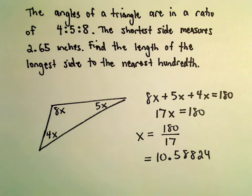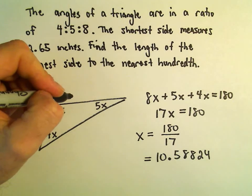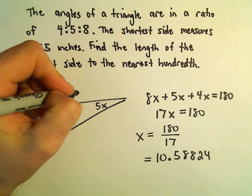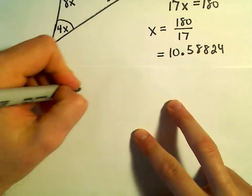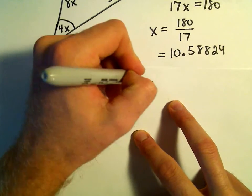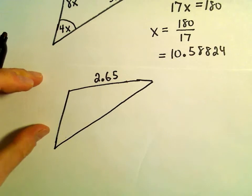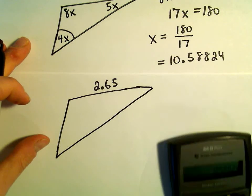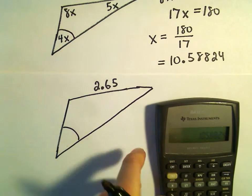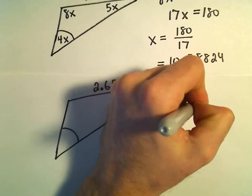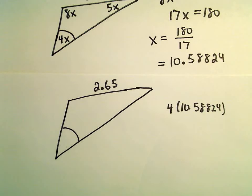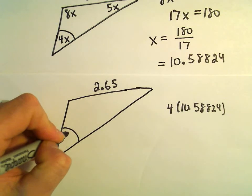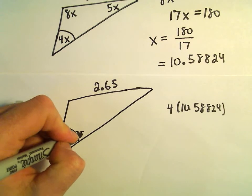Okay, so we'll have to use that to get the angles. So let's see here. The shortest side, okay, the shortest side would be the one opposite 4x. We know that has a length of 2.65. So maybe I'm going to draw my triangle here again. So there's our 2.65. All I'm going to do now is I'm simply going to take 4 and multiply it by our 10.58824 to get the angle sort of down here in the bottom left. So if we multiply that by 4, I'm getting this to be the angle 42.35 degrees.